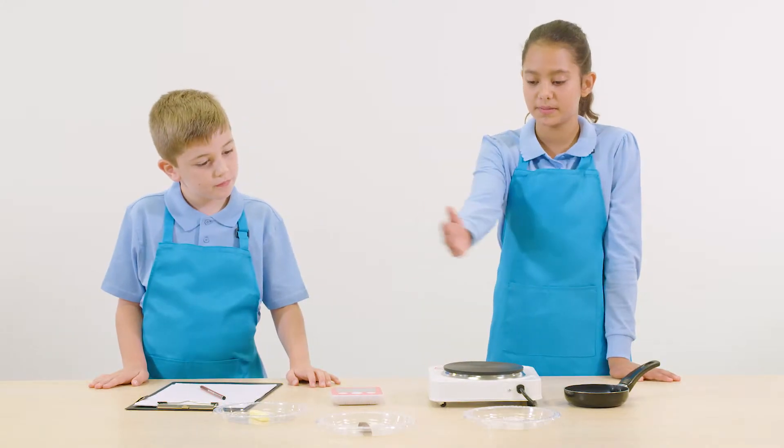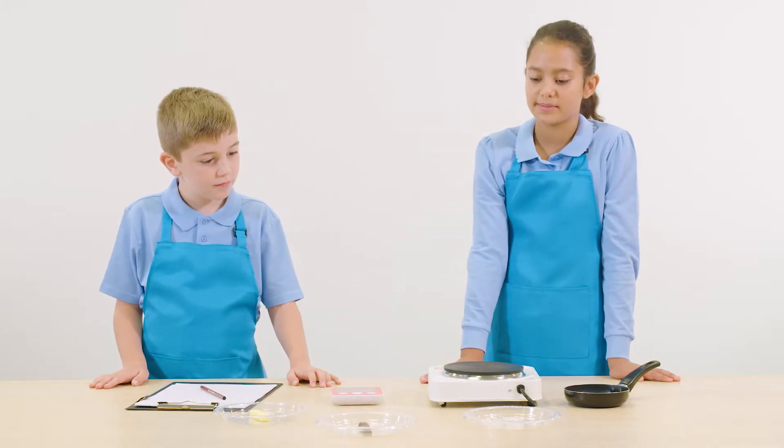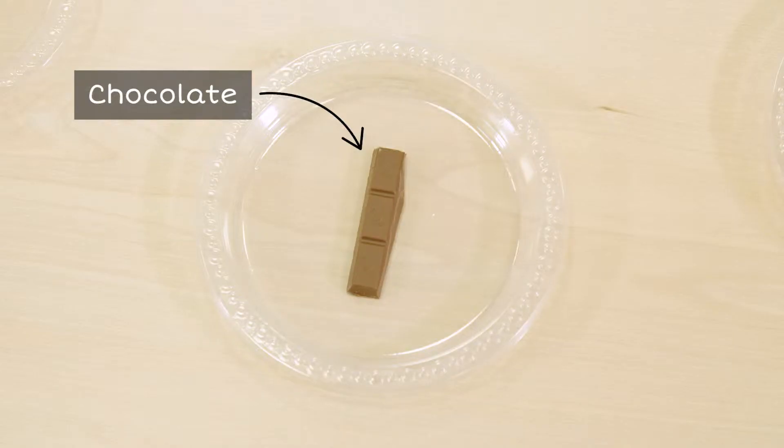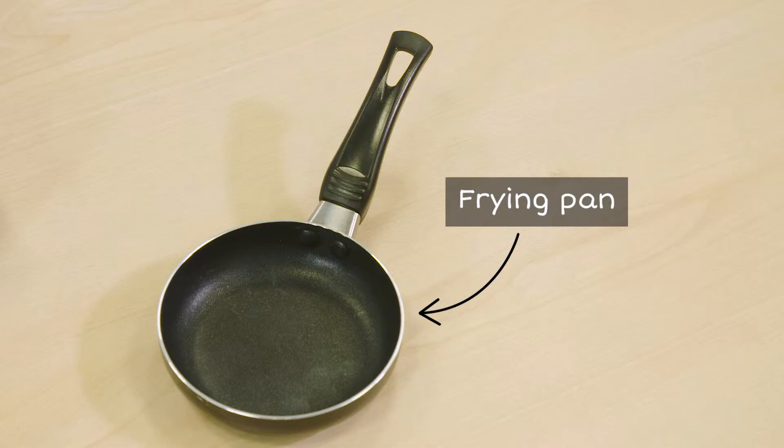Here are the ice cubes, butter, and chocolate. They're all the same size for a fair test, and we use the same pan to heat each one. Did you think of those two things to make sure the test was fair?